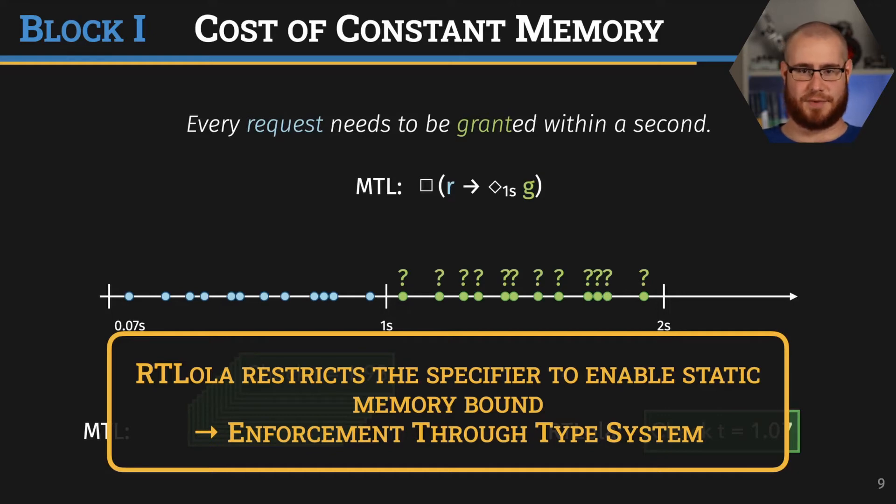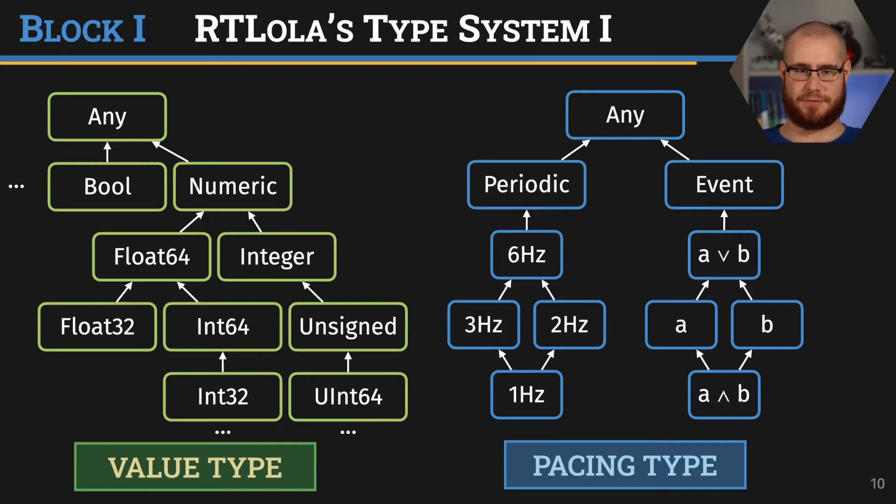Now, to understand how the static enforcement works, let's have a look at the type system. The RTLola type system is twofold. We have value types and pacing types. Value types are just the regular old types you know from pretty much any typed language. They state the shape and interpretation of a value. For example, if a value has type Int64, then we interpret it as an integer consisting of 64 bits.